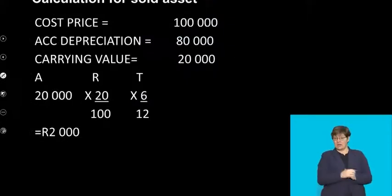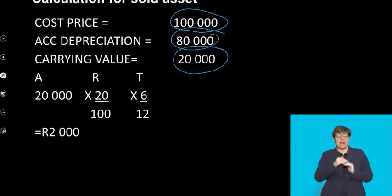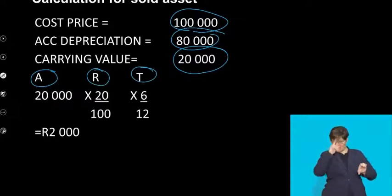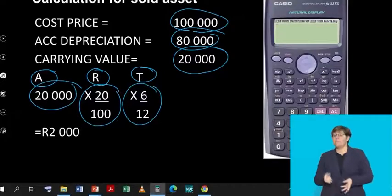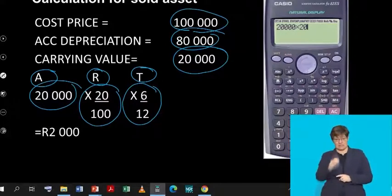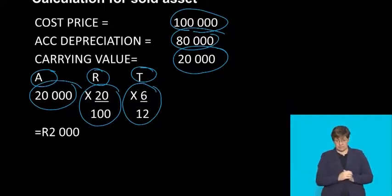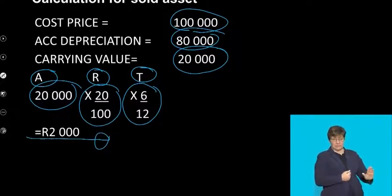Step number one: let's do the sold asset. Because it's a diminishing balance method, we take the cost price of R100,000 minus R80,000 to give us R20,000 — that's my carrying value. Using ART — amount, rate, and time — take R20,000, the rate is 20 over 100, times 6 over 12. R20,000 times 20% times 6 divided by 12 gives you R2,000. So that is the depreciation on the sold asset.